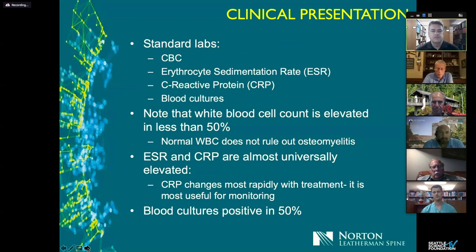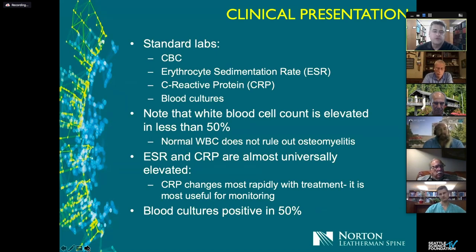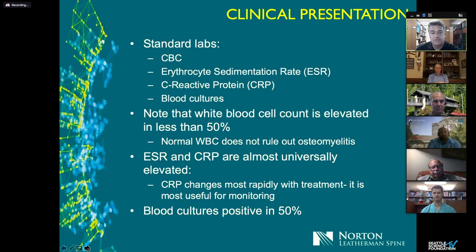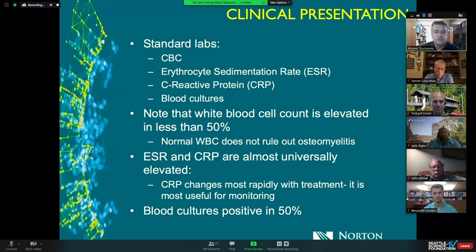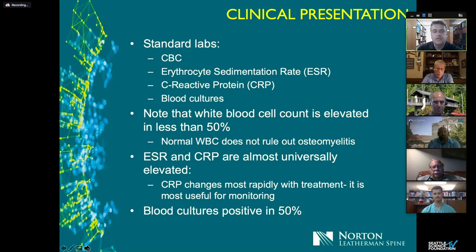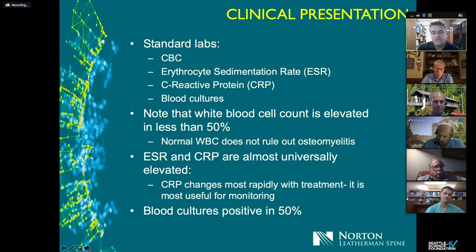When we get one of these patients, we order a standard battery of labs: CBC, ESR, C-reactive protein, and blood cultures. CBC is useful, but about 50 percent of these patients will not have an elevated white count, so a normal WBC does not rule out osteomyelitis. In contrast, ESR and CRP are almost universally elevated. CRP is the most useful inflammatory marker because it changes most rapidly with treatment — it's what we follow when treating conservatively with IV antibiotics. Blood cultures are positive about 50 percent of the time; a positive culture gives you an organism to tailor antibiotic therapy.